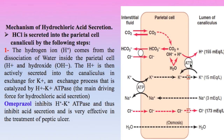If we want to inhibit the secretion of HCl, we should inhibit this step. This is usually needed in the treatment of peptic ulcer. There is a drug called omeprazole which inhibits hydrogen-potassium ATPase and thus inhibits acid secretion, and this is very effective in the treatment of peptic ulcer.